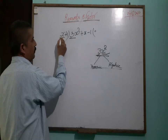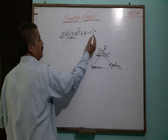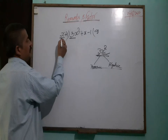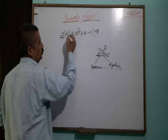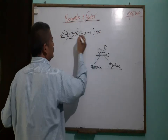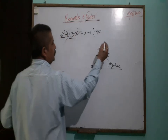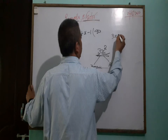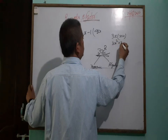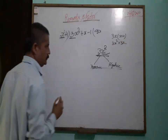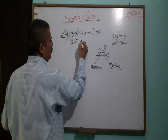Again we check: the numeric coefficient will be 1 and numeric coefficient will be 3. So we multiply by 3. The power of x in the divisor is 1 and in the dividend is 2, so we multiply by x. Then x into 3x into x plus 1 gives us 3x squared plus 3x. That will be written here: 3x squared plus 3x.